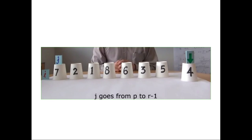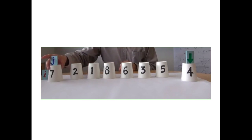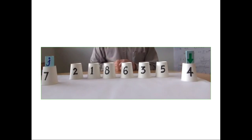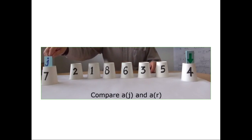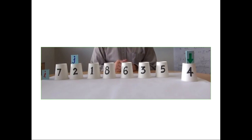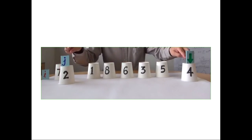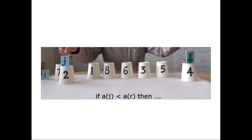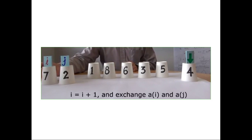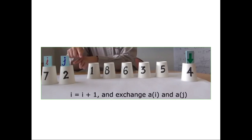We have 4 as the pivot. If 4 is equal to 4, then we check against 7. If we move the same way and increase the j value, then when 4 is equal to 4, the two remaining elements are on the left side, so we swap the two.